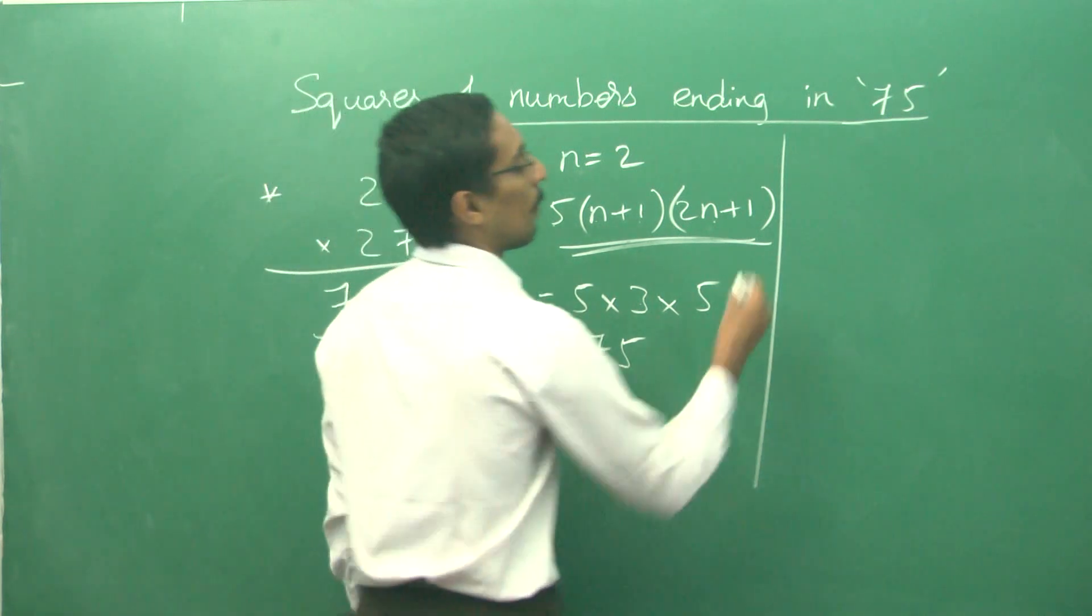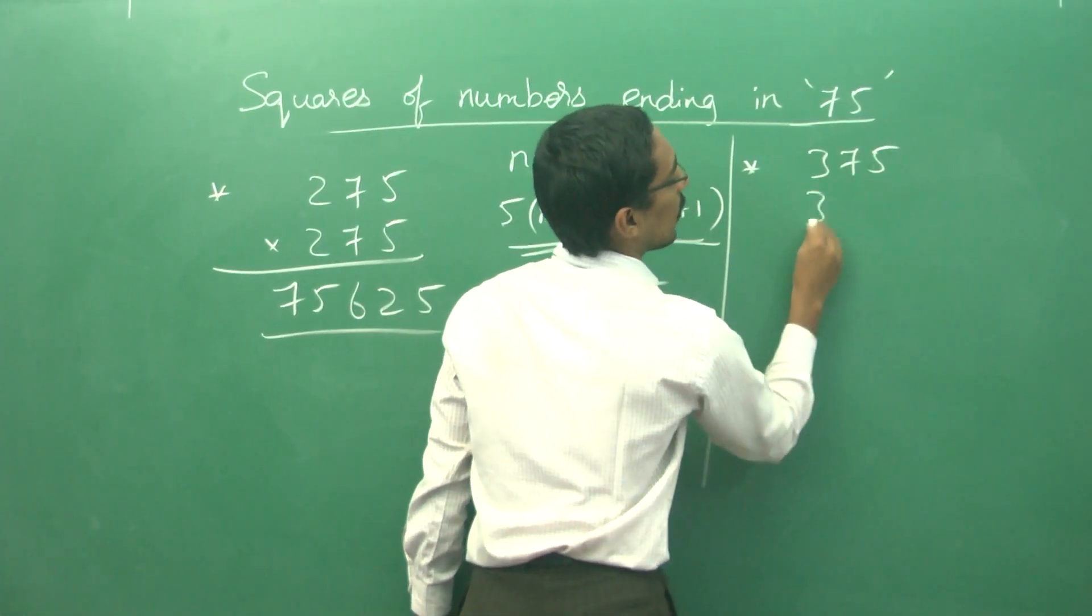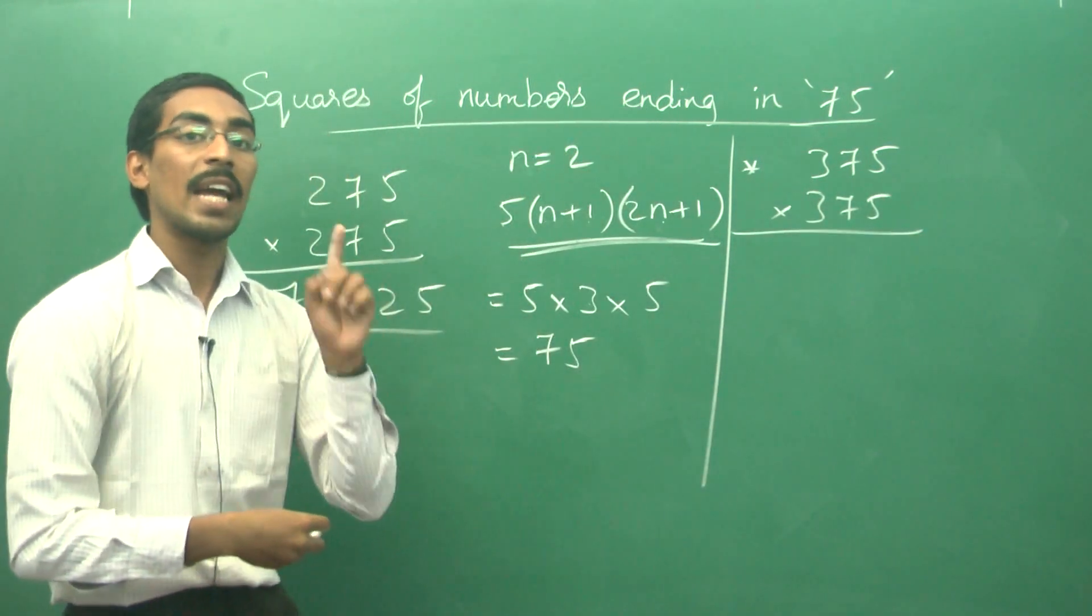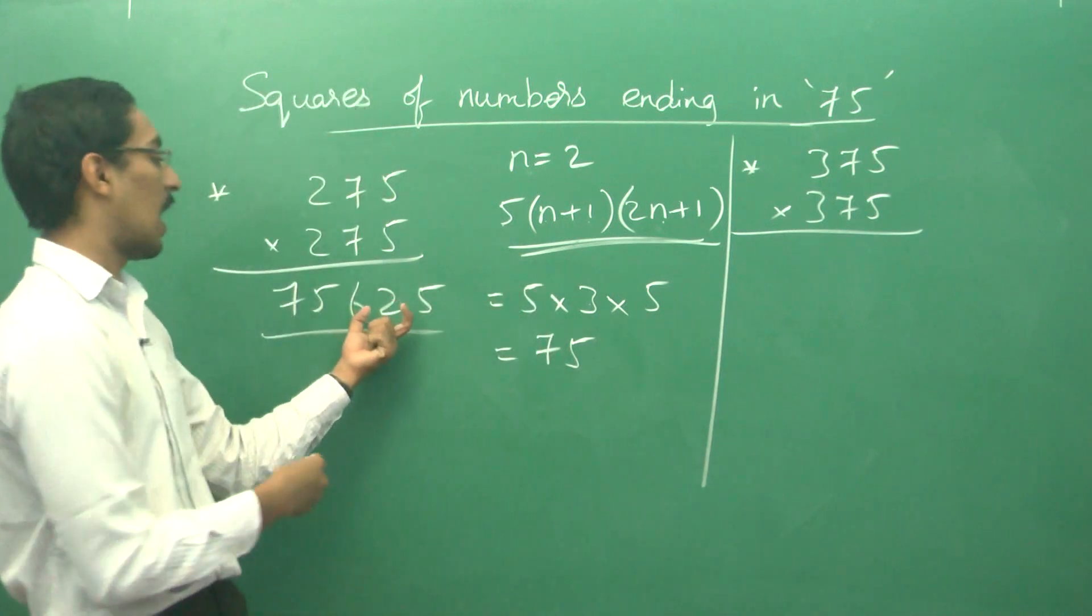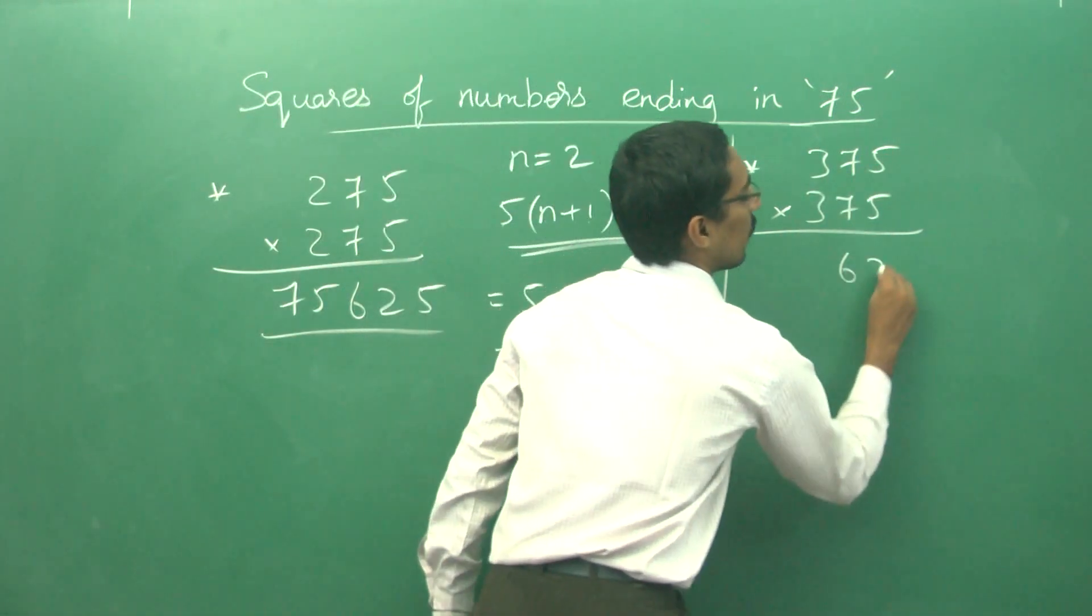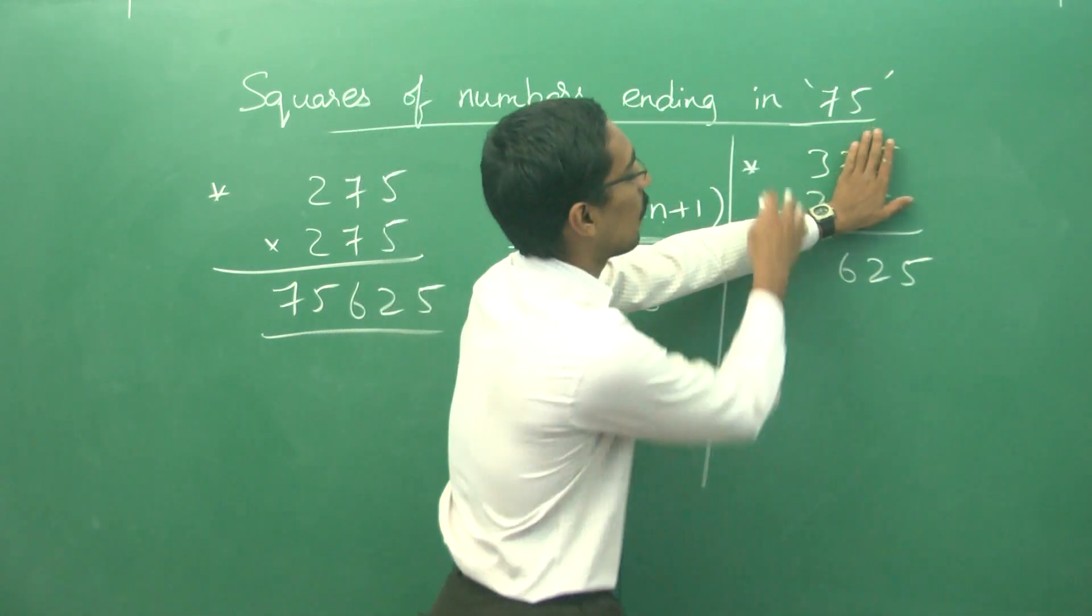Let us take 375 square. Now how do you start? Again remember, 25 square is the last three digits, that will be 625. That is the same.